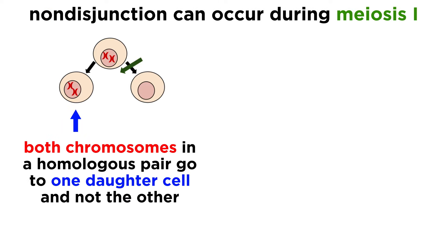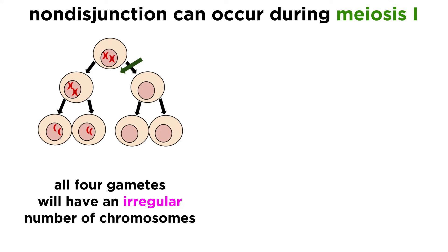Say that in meiosis I, a particular pair of chromosomes both go to one daughter cell and not the other, instead of one going to each. After meiosis II, four gametes will result, two of which will have an additional chromosome, or N plus one, and two of which will be missing a chromosome, or N minus one.